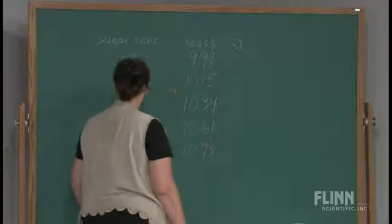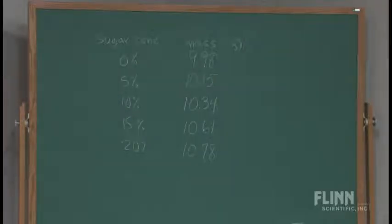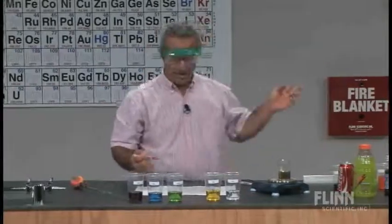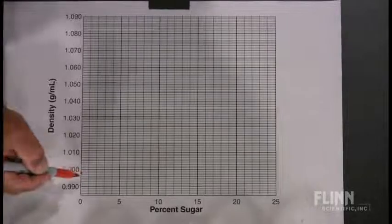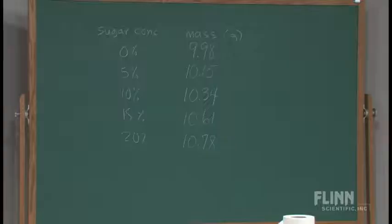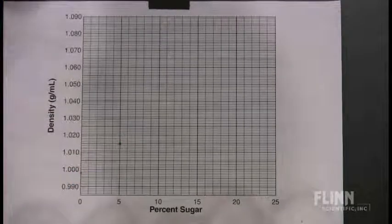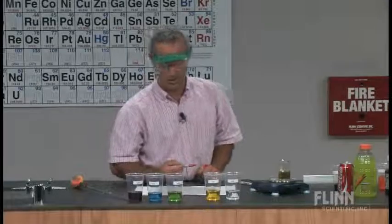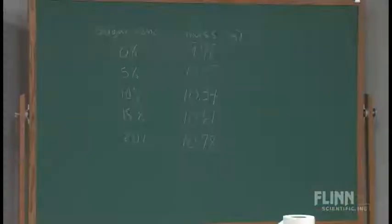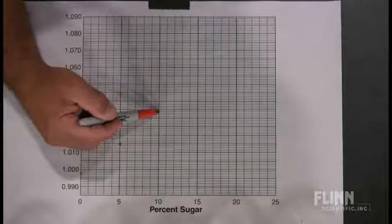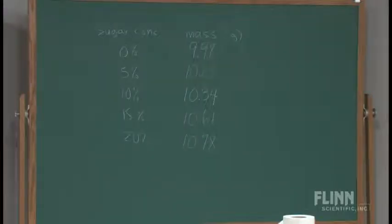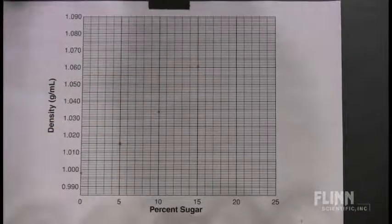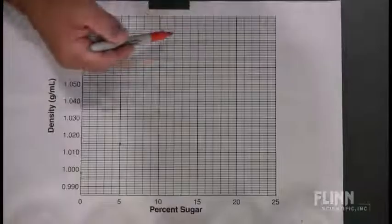So let's see what that looks like as a relationship. I'll take those values off the board and divide them by 10 to get density. Zero percent is 0.998, five percent is 1.015, ten percent is 1.034 — that's looking pretty linear. Fifteen percent is 1.061, and twenty percent is 1.078. I'm going to draw a best-fit line. Now we have a standardized plot.